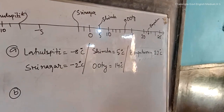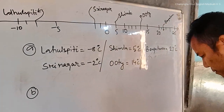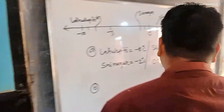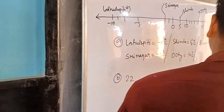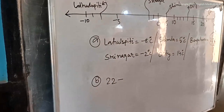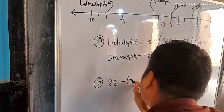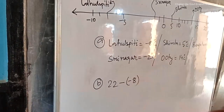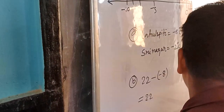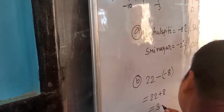Bengaluru would be the hottest place and Lahul Spiti is the coldest place. We have to find the difference between the hottest and the coldest place — that is subtraction. Bengaluru is 22 minus Lahul Spiti which is minus 8. Minus minus gives plus 8, so the difference becomes 30.